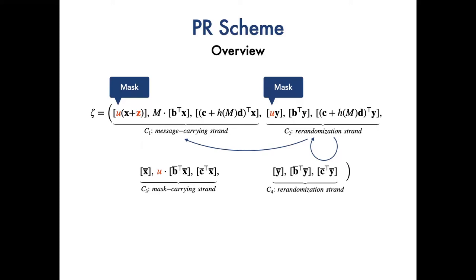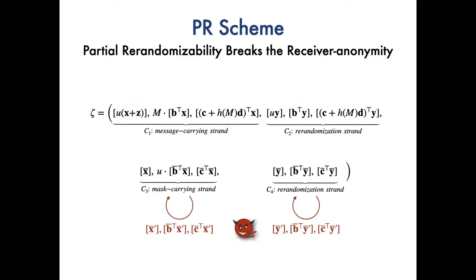Here, the blue arrows illustrate the only way to randomize C1 and C2. However, one can note that there is no such mask or vectors in strand C3 and C4. So those two strands can also be randomized with public keys, which means the adversary is able to guess the public key and verify its guess via querying the decryption oracle. So the partial randomizability of ciphertext breaks the receiver anonymity of the whole scheme.